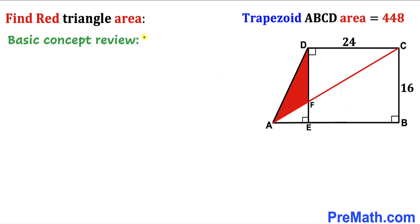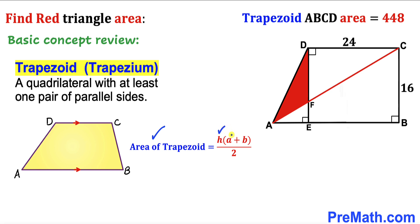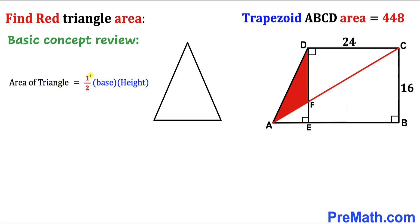Let me go over the basic concepts. A trapezoid — sometimes we call it trapezium — is a quadrilateral with at least one pair of parallel sides. In this trapezoid ABCD, side AB is parallel to side CD. The area of a trapezoid formula is: area equals H times (A plus B) all over 2, where AB is base B and H is the height. The area of a triangle formula is: area equals one-half times base times height.